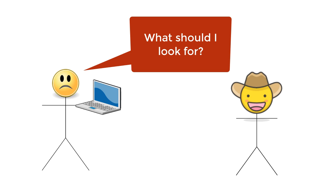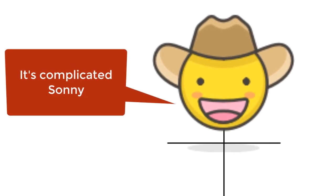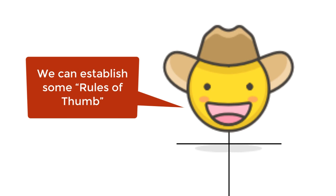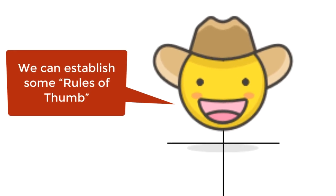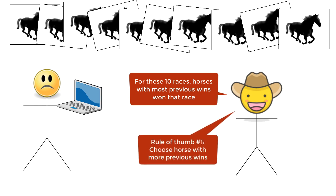And he says, well, it's complicated. There's no grand set of rules, you see. To which you say, well, okay then, but what if we take a look at just these 10 races only? And he says, well, there are some rules of thumb that we can establish. For example, for these 10 races, it looks like the horse with the most previous wins won that race. So just bet on the horse with the most previous wins.